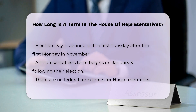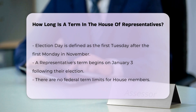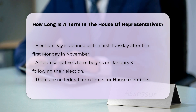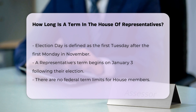This means that each member of the House serves a term that lasts for two years. Elections for the House are held in every even-numbered year, on Election Day, which is the first Tuesday after the first Monday in November.